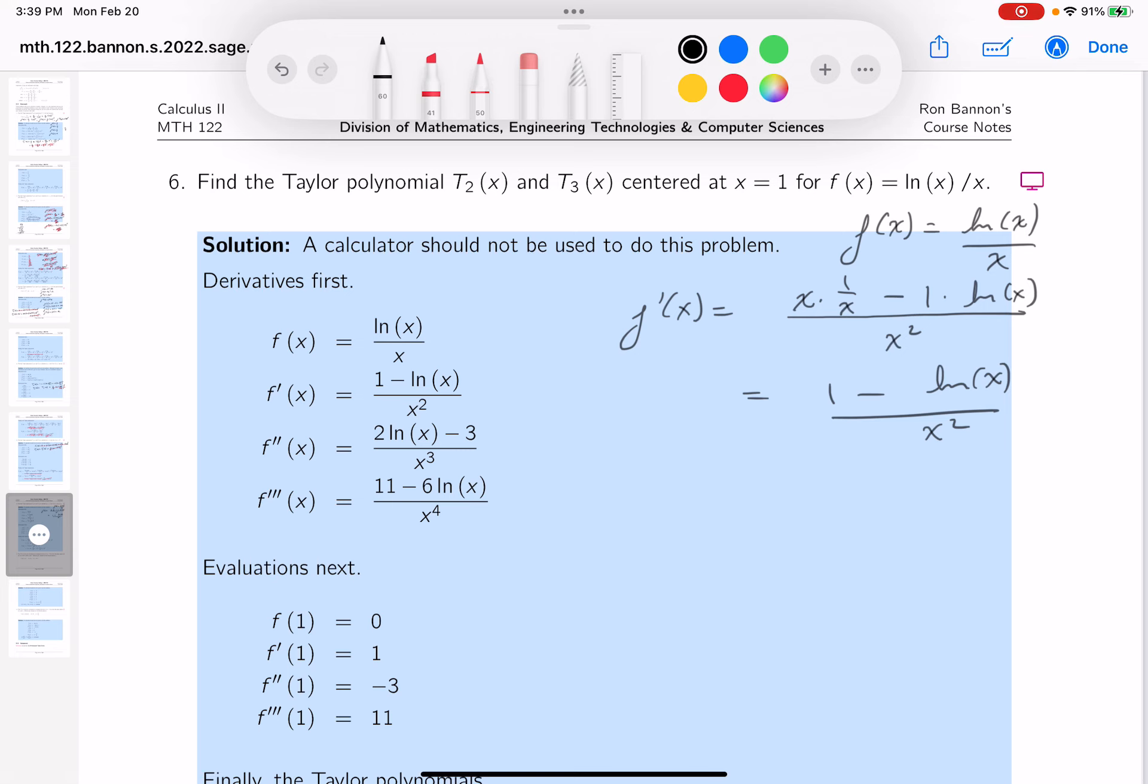1 minus the natural log of x over x squared. All right? So let's go to the next one, which is f double prime. And let's see what you get over there. Square the bottom, that's x to the 4.